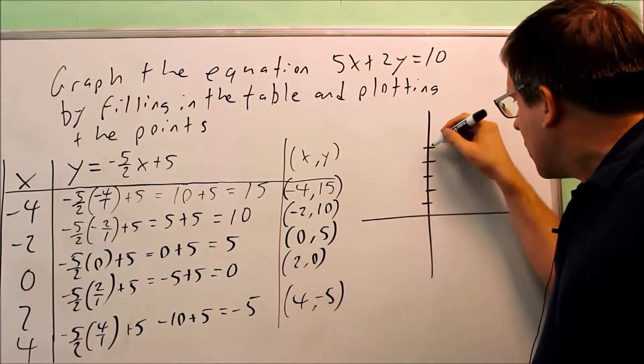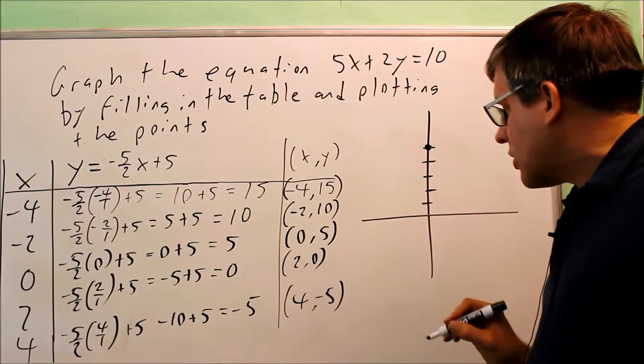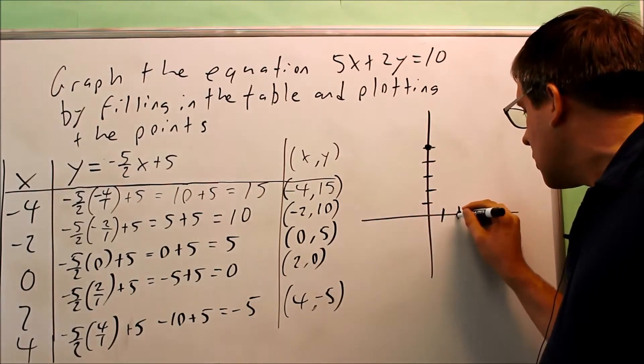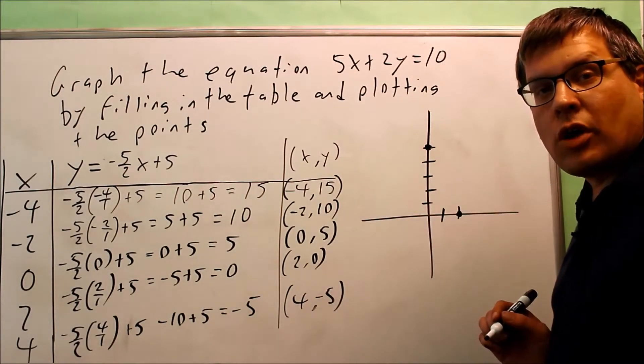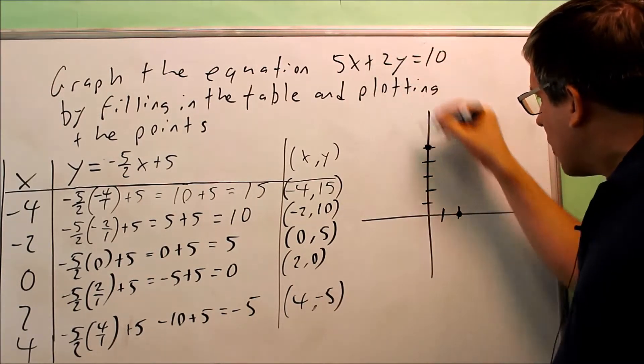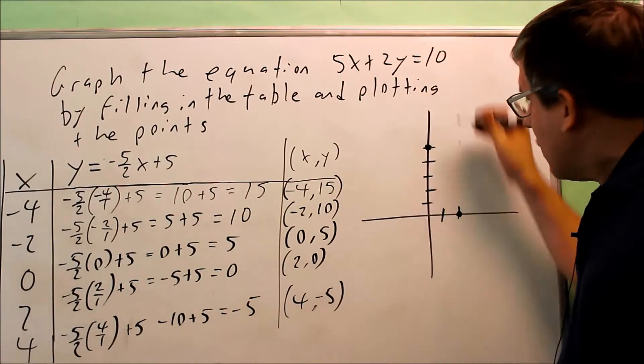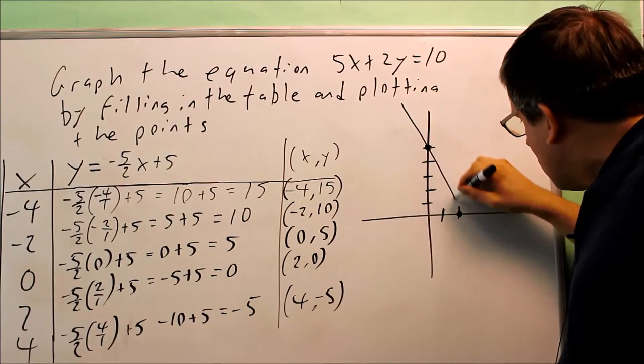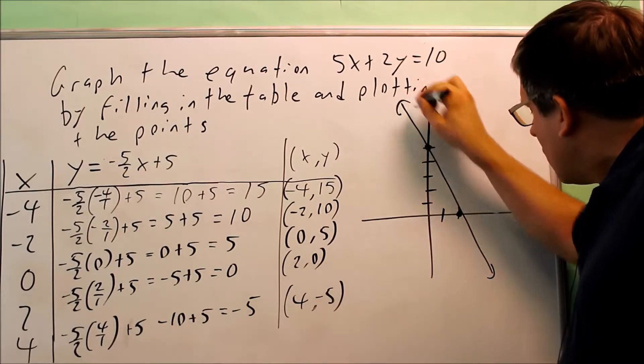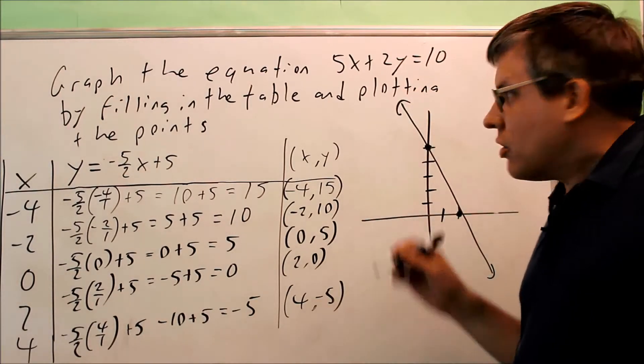So 0 is going to go up, up 5 because the y is positive. And I have 2 comma 0. Go to the right. And 2 is going to be right there. Now all the other points are going to be falling along this line. But you only need these two to connect to get your equation, to graph your equation.